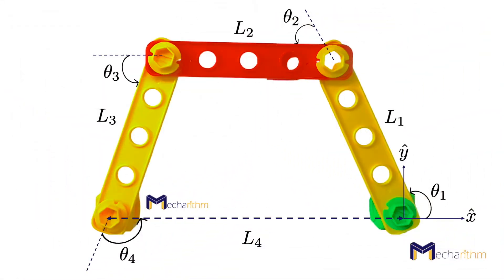Let's see this with an example. Remember our famous four-bar linkage with one degree of freedom? If you don't, please refer to the lesson on degrees of freedom of the robot. Consider a four-bar linkage that has four links — remember that ground is a link. This linkage, as we saw in the previous video, has only one degree of freedom and the two ends are pinned to the ground.